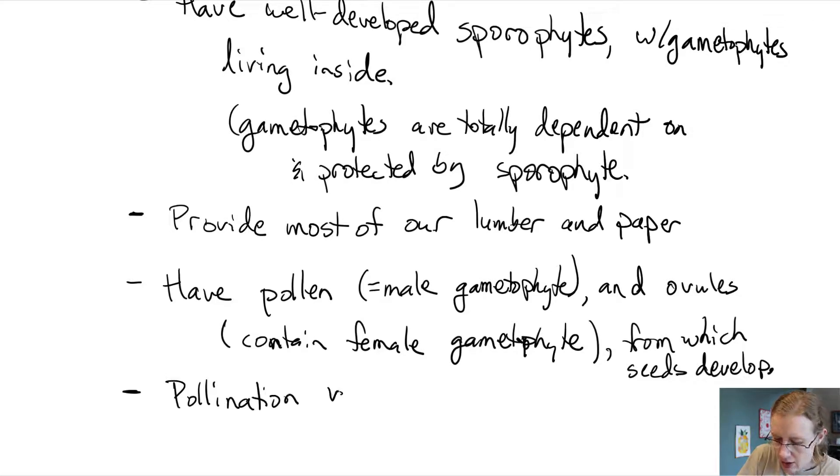Pollination via wind, which means no water required. This means that these trees can live through times of drought. They can live in dry conditions. It's okay if they don't always have access to water on the ground.